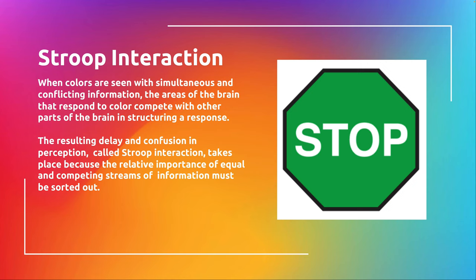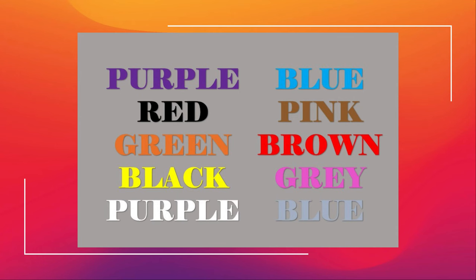Stroop interactions are relatively interesting and fun. It's basically when colors are seen with simultaneous, conflicting information — and conflicting is the important part. Like a green stop sign — stop signs are never green; we're all conditioned to associate red with stop. When you see that conflicting information, it takes our eyes and brain a moment — maybe a millisecond — to figure it out. Sometimes artists play with that to purposely disconnect your brain.